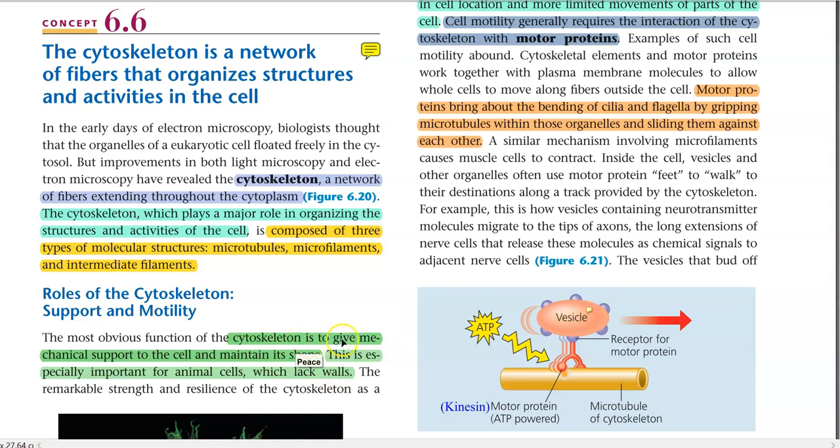Cytoskeleton gives mechanical support to the cell and maintains the shape of the cell. It is especially important in animal cells since they lack cell walls.